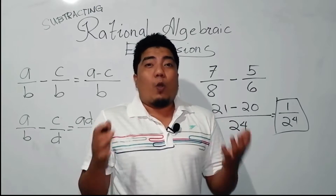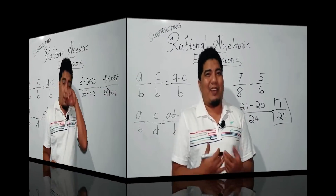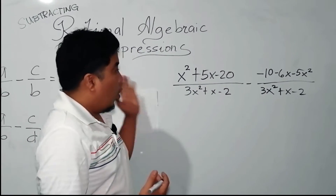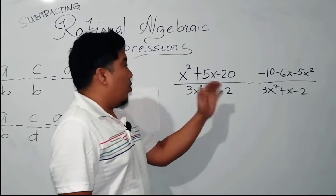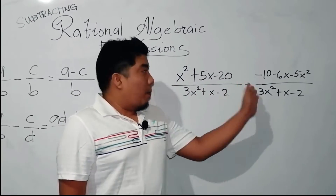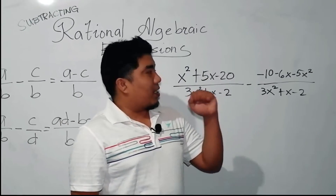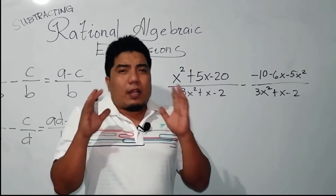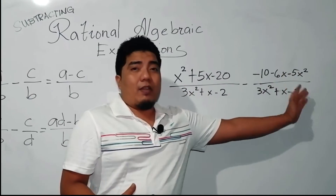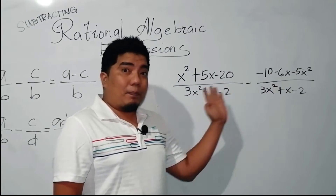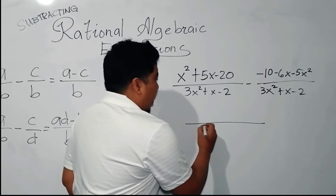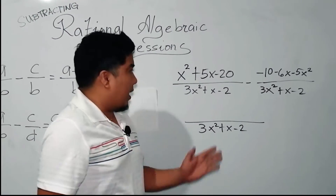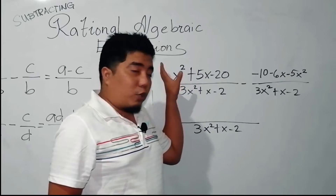Let us go to an example where variables and constants are there. We are here in our first example about rational algebraic expression. We have x squared plus 5x minus 20 all over 3x squared plus x minus 2, minus the expression negative 10 minus 6x minus 5x squared all over 3x squared plus x minus 2. Let us first observe our given expressions — they have the same denominator, so what we do here is we copy the denominator. Basically, we subtract this expression from this expression.